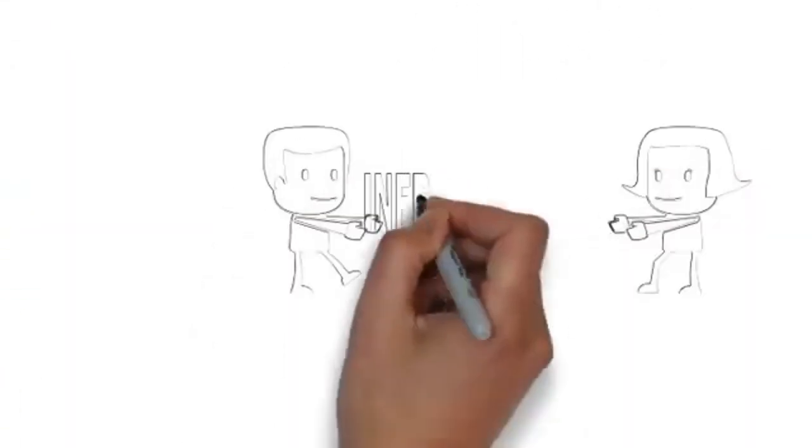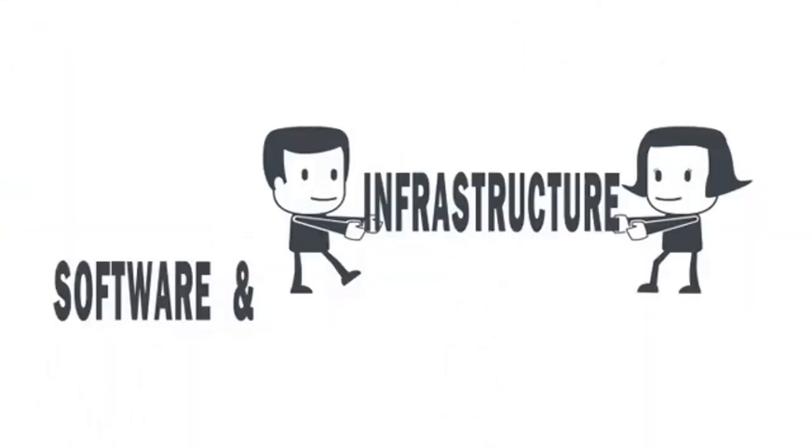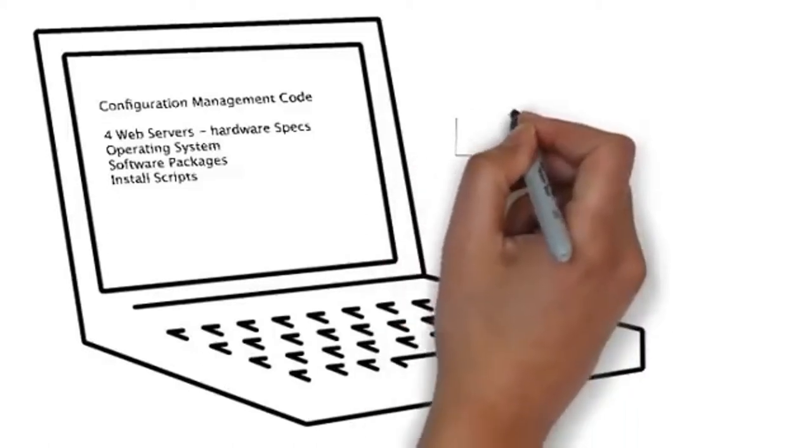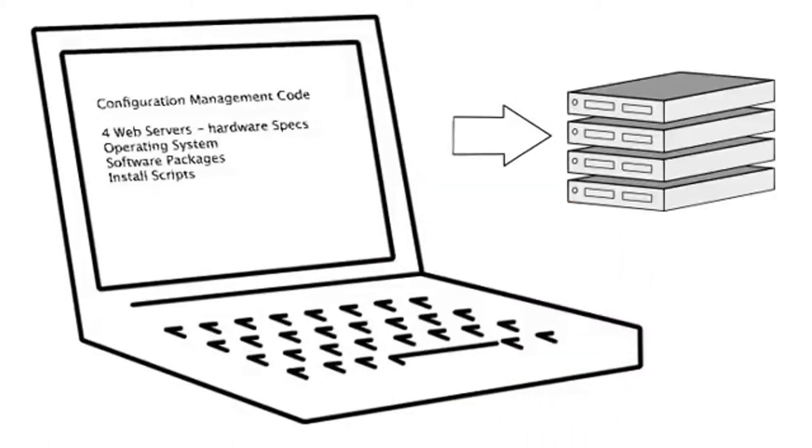Instead of building and configuring software plus infrastructure manually on an ad hoc basis, Anna and Dave's teams would write configuration management code that describes how things should be built. As a result, they will have the ability to build infrastructure at scale to dozens, hundreds, or even thousands of servers in multiple locations using different types of hardware.